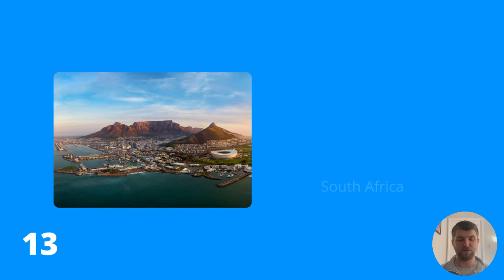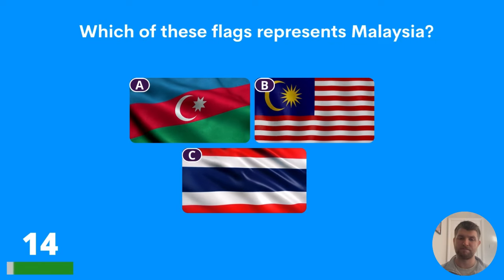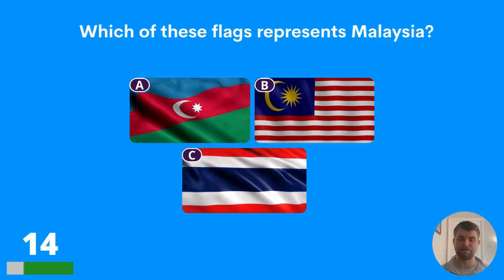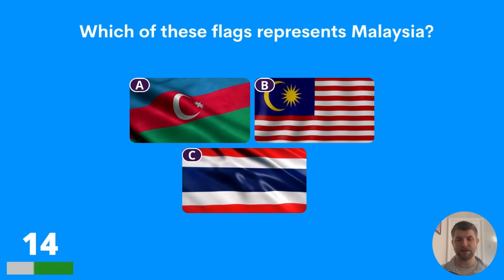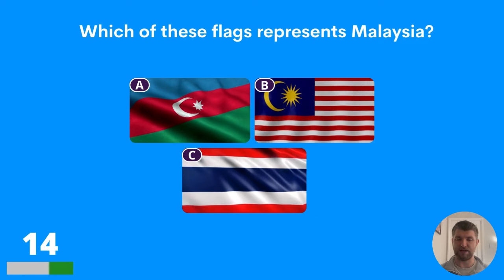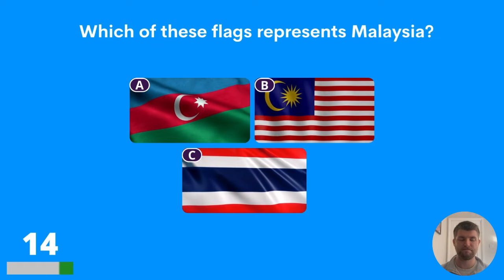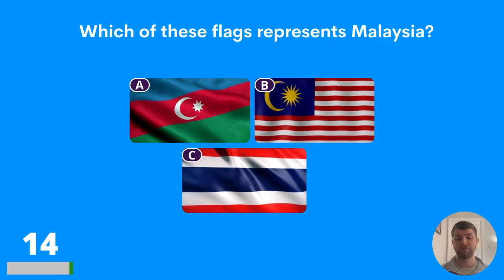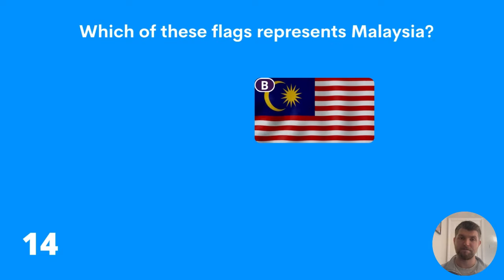Question fourteen: which of these flags represents Malaysia? A, B, or C — three options this time. Can you identify the flag of Malaysia? The answer is B.